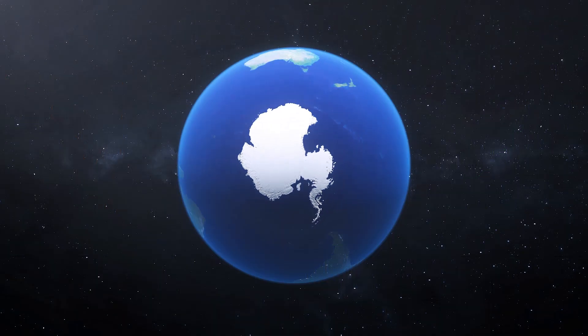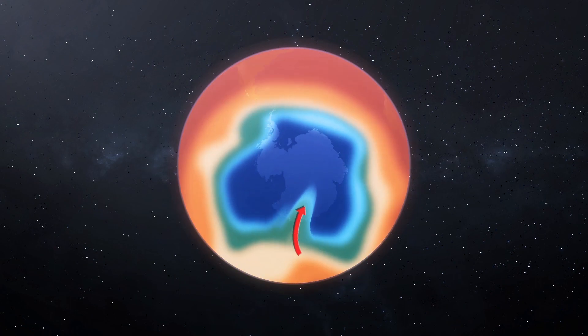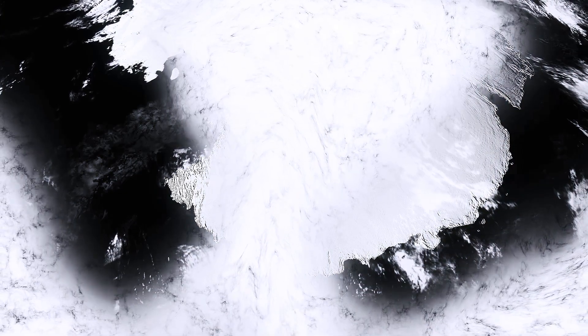In both regions, warm air being transported by strong winds is responsible for the temperature spikes according to Severe Weather Europe, though an atmospheric river was also a major contributing factor in the eastern Antarctic, according to one climate researcher cited by The Guardian.